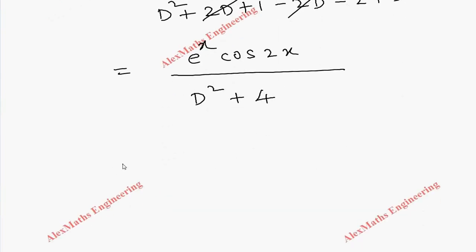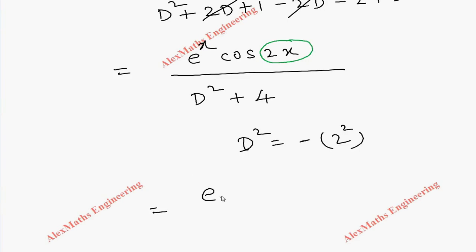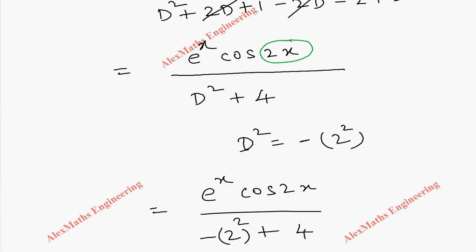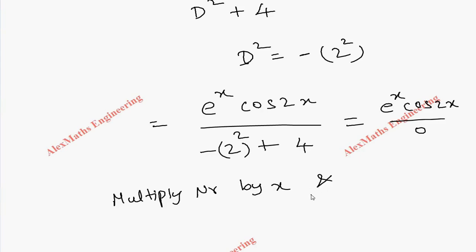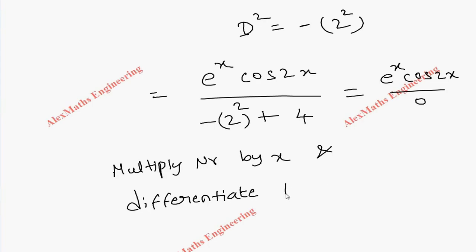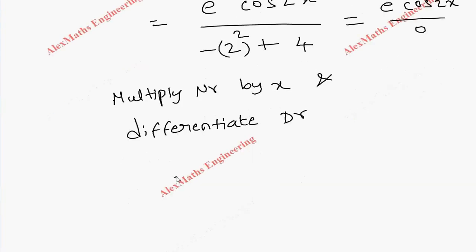Now we replace D² with minus 2² (with a minus sign) as per the procedure, since we have cos(2x). So the denominator becomes minus 4 plus 4, which equals 0. When the denominator is 0, we must multiply the numerator by x and differentiate the denominator. So the expression becomes x times e^x cos(2x).